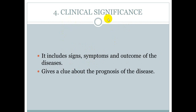Fourth is clinical significance. Clinical significance includes signs, symptoms and outcome of the disease. Ek disease ho gaya, us ki alamaat kya hongi, us ke signs kya honge, aur us ki prognosis kya hogi — to us ki study ko we call that the fourth core of pathology, that is clinical significance.